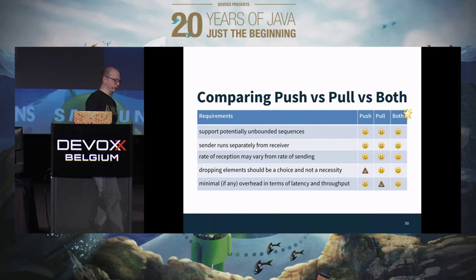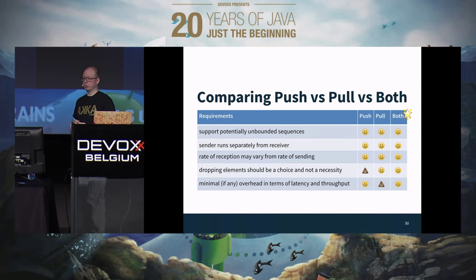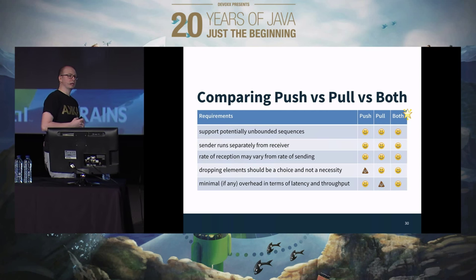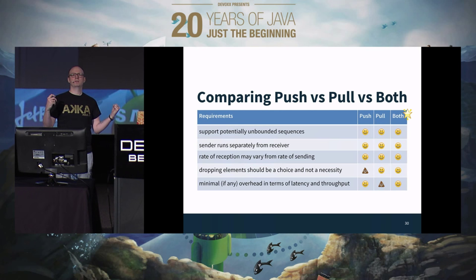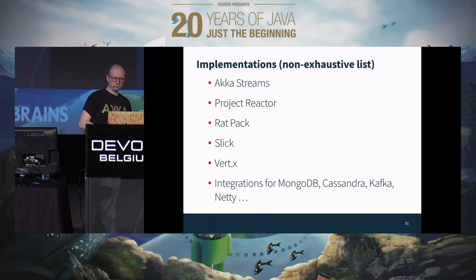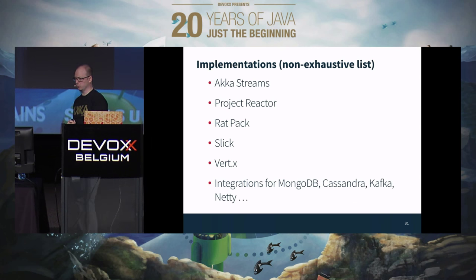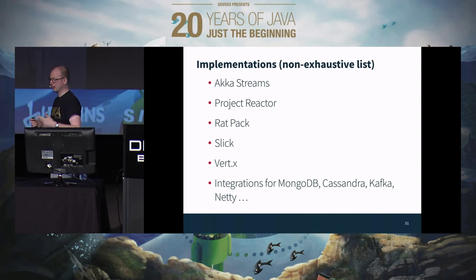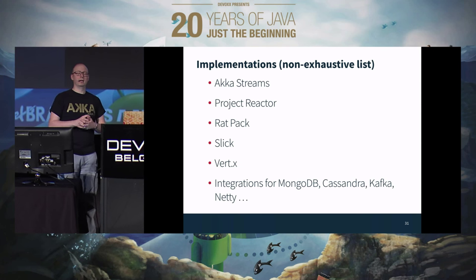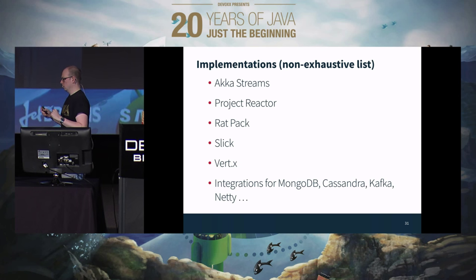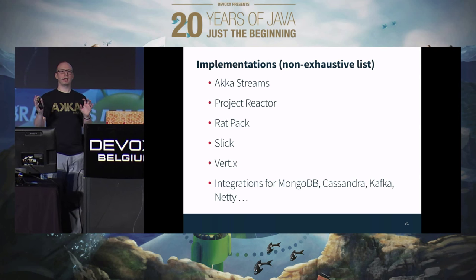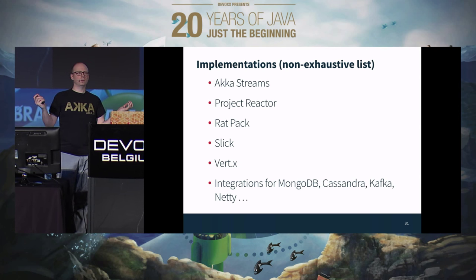We address the push case because we don't have to drop information — we request information. And we offset the cost of pulling by amortizing the demand — we ask for 100, and we send one demand message per 100 elements. Implementations include Akka Streams, Project Reactor, Rat Pack, Slick, and Vert.x, with integrations for several databases and IO libraries, and much more on the way. If you have a database with a reactive streams interface, you can connect your reactive streams-based thing with it and get the transitive back pressure properties without having to do anything.